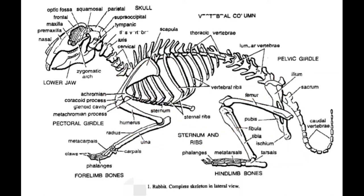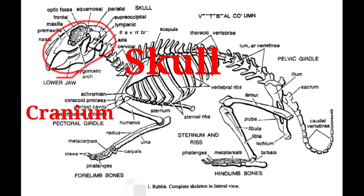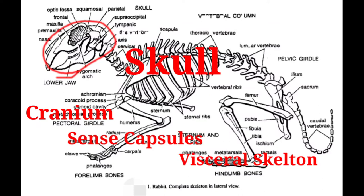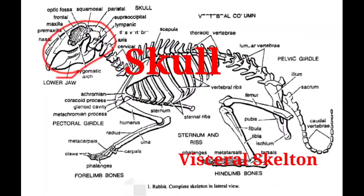In the present video we will be talking of the endoskeleton of skull. Skull is made up of cranium, sense capsules, and visceral skeleton. Cranium is the covering of the brain. The sense capsules include the olfactory capsule linked with olfaction or sense of smell, the auditory capsule linked with hearing, and the orbits that enclose eyes. The visceral skeleton includes upper jaw and lower jaw.